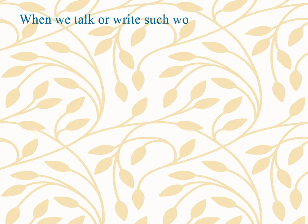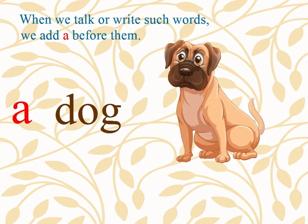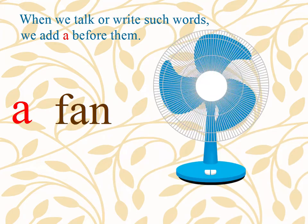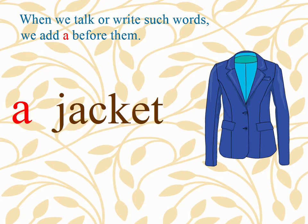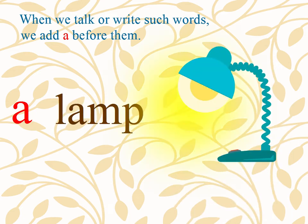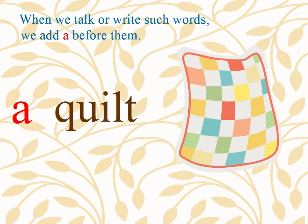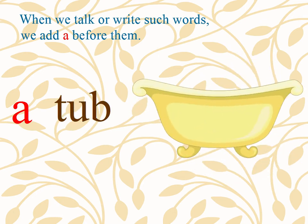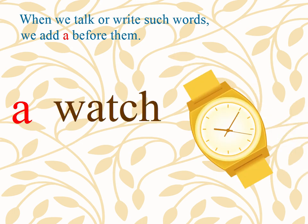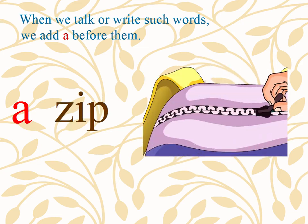When we talk or write such words, we add A before them. A boy, a cat, a dog, a fan, a grape, a hat, a jacket, a kite, a lamp, a mat, a net, a pot, a quilt, a rat, a snake, a tub, a violin, a watch, a xylophone, a yak, a zip.